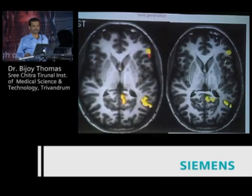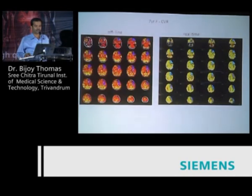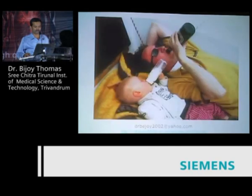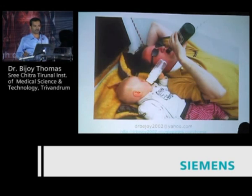Pediatric fMRI is a challenge, and we need to optimize paradigms. Another important area of research being conducted both at SickKids and Sree Chitra is cerebrovascular reactivity mapping for revascularization assessment in Moyamoya disease in children. In summary, children are not just tiny adults—they need a different strategy, from selecting and optimizing sequences to limiting scan time. Thank you.